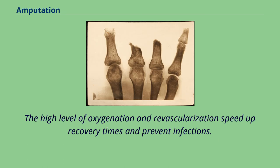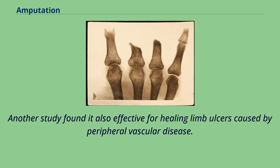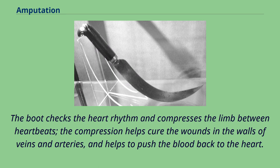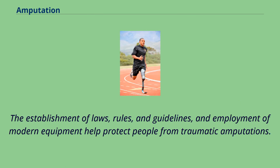The high level of oxygenation and revascularization speed up recovery times and prevent infections. A study found that the patented method called the circulator boot achieved significant results in prevention of amputation in patients with diabetes and arteriosclerosis. Another study found it also effective for healing limb ulcers caused by peripheral vascular disease. The boot checks the heart rhythm and compresses the limb between heartbeats, helping cure the wounds in the walls of veins and arteries and pushing blood back to the heart. For victims of trauma, advances in microsurgery in the 1970s have made replantations of severed body parts possible. The establishment of laws, rules, and guidelines, and employment of modern equipment help protect people from traumatic amputations.